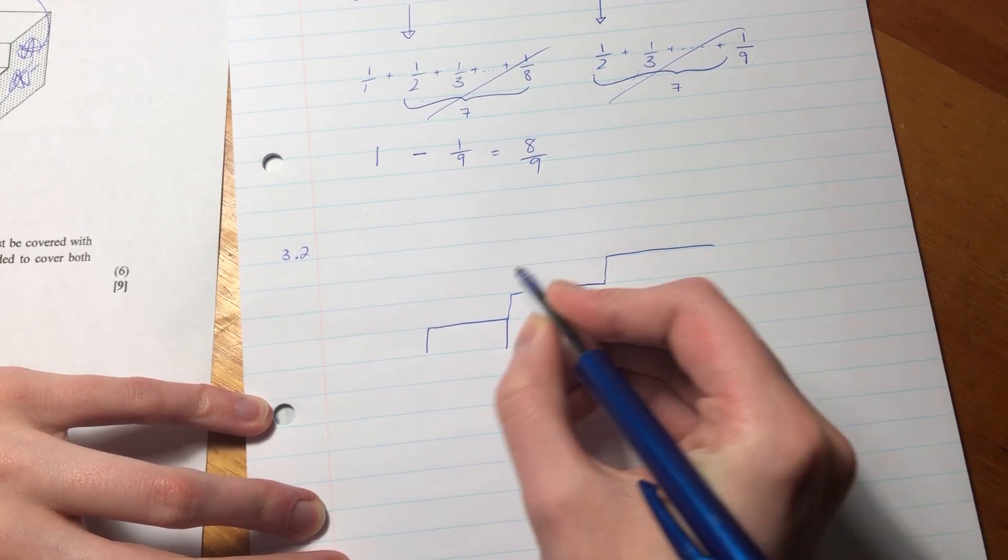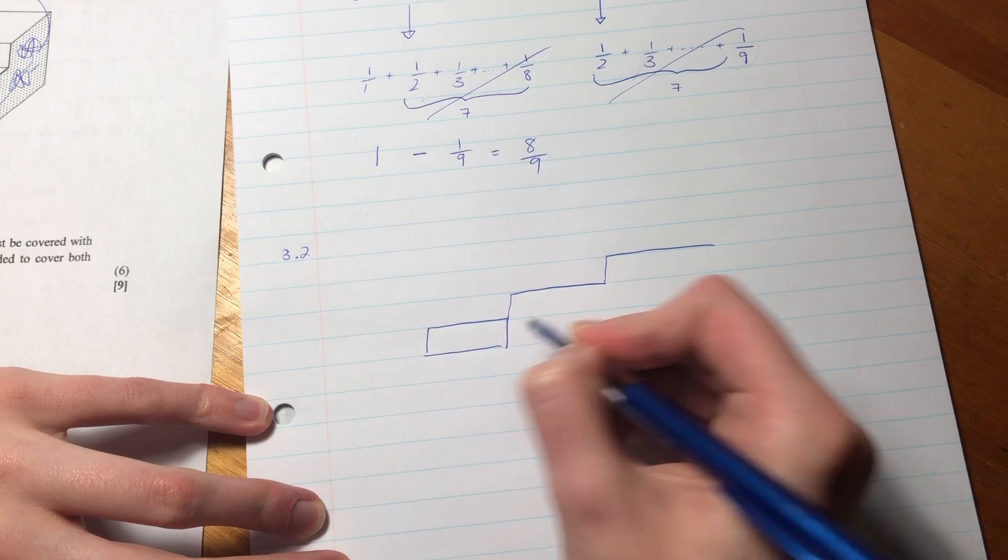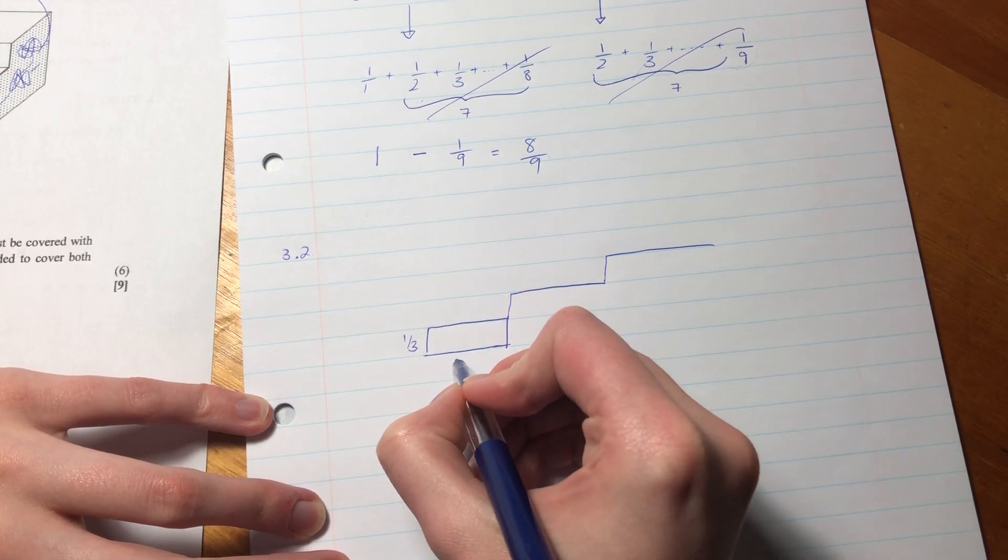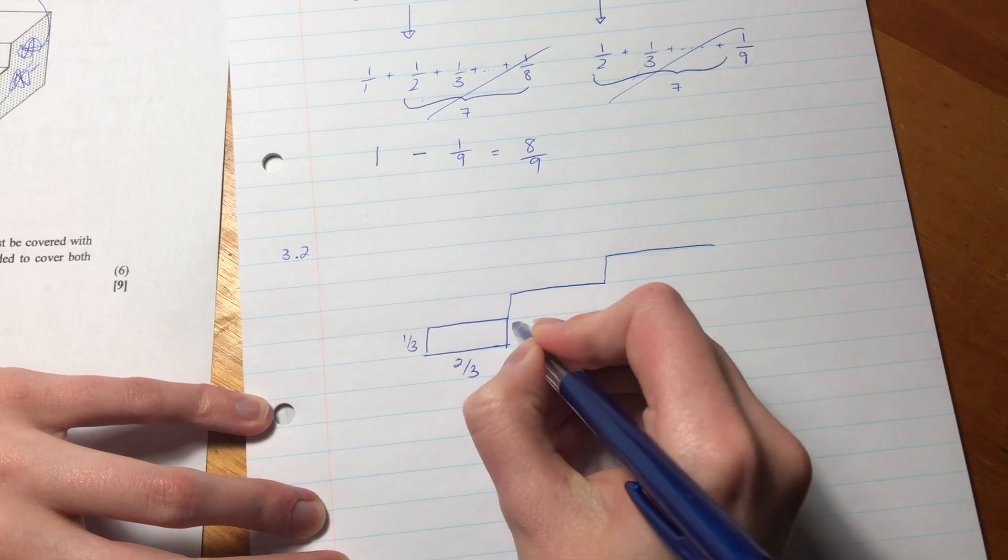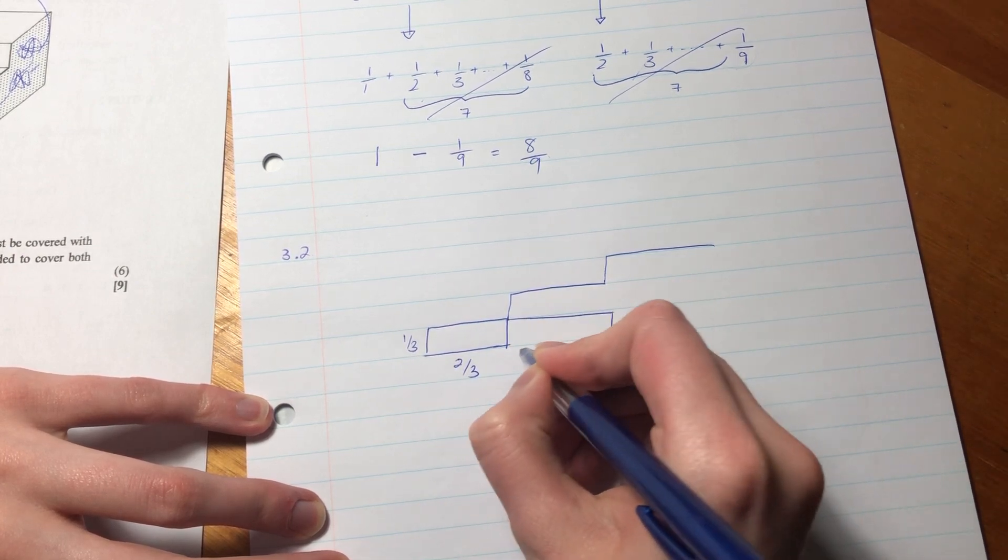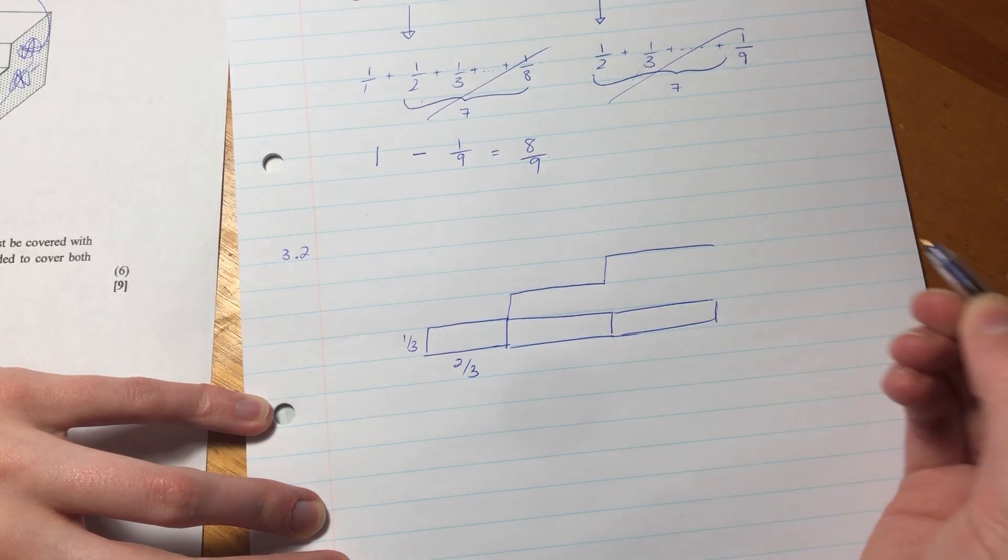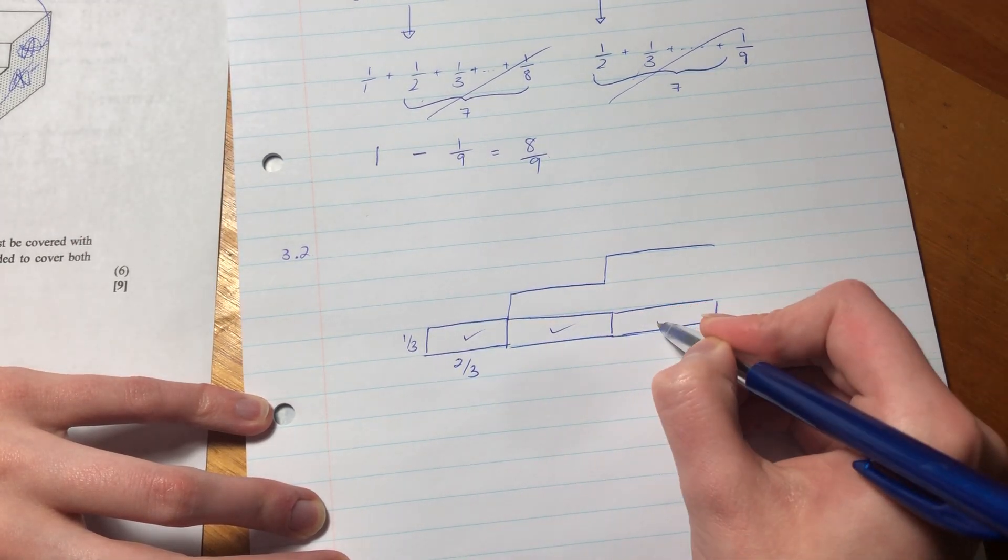That's going to be one step: 1/3 by 2/3. This pattern runs the whole way along all 12 steps, so there will be 12 of these rectangles on the bottom step.